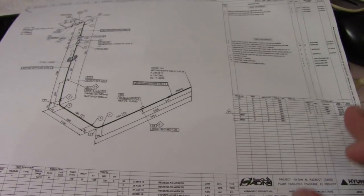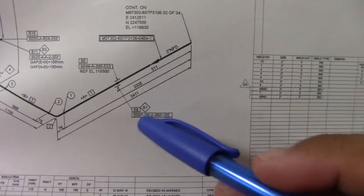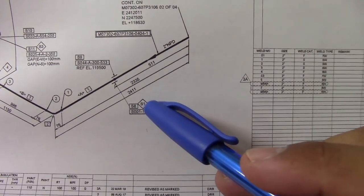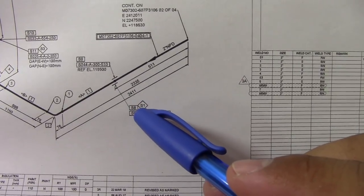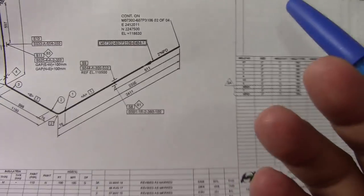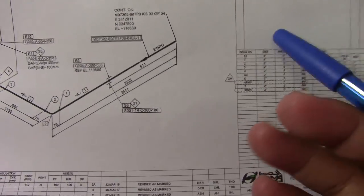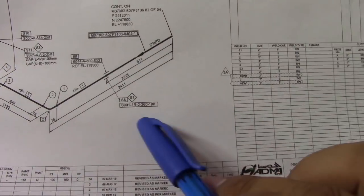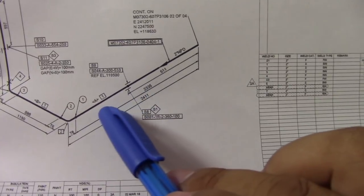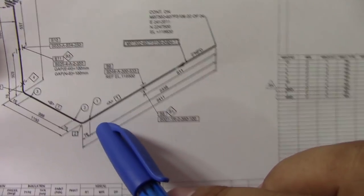This support is a welded type. So this support S001 is not yet installed, and because it is welded on the pipe, that means this is Category A. Category A is for items that are attached or welded onto the pipe.